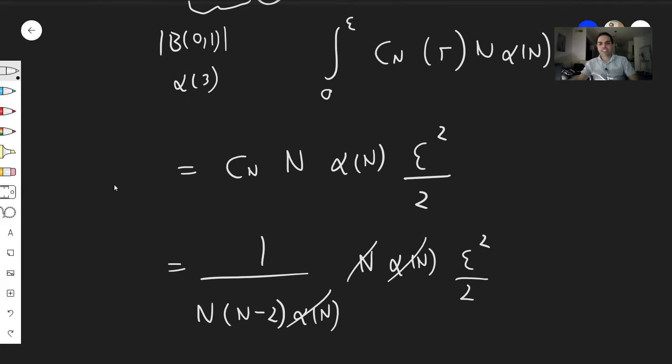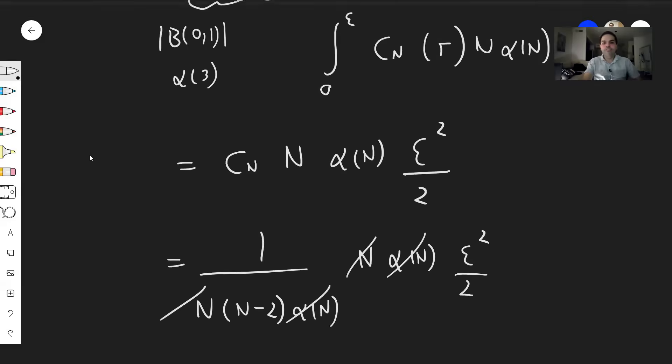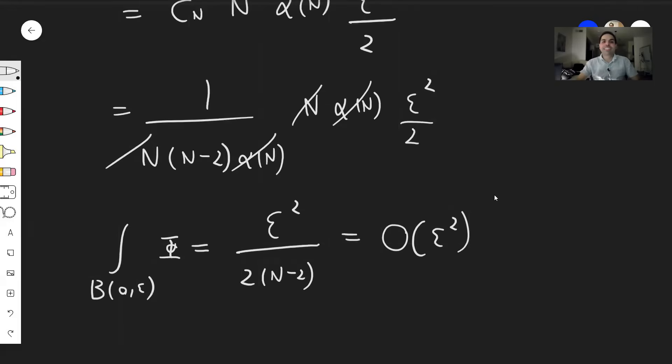And last but not least, remember the definition of C_N, that becomes 1/(N(N-2)α_N), N α_N, ε² over 2. Beautiful cancellations. And what we're left with is simply the integral of the fundamental solution over this ball is just ε² over 2(N-2), which is just a constant times ε². In particular, as you let epsilon go to zero, this goes to zero, so it doesn't blow up. So this is one of the many illustrations of the polar coordinates formula, and in particular, how they apply to PDEs.